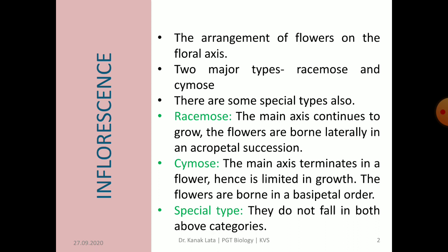First we will make it clear about the differences between them. In racemose inflorescence, the main axis continues to grow and flowers are borne laterally in acropetal succession. Acropetal succession means older flowers are at the base and younger flowers are at the top. In cymose, the main axis terminates into a flower, so the floral axis is limited in growth and the flowers are borne in basipetal order — older flowers at top and younger flowers at bottom, just opposite to the racemose type. Special types of inflorescence do not fall in either of these categories.